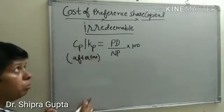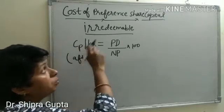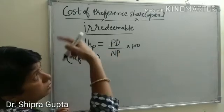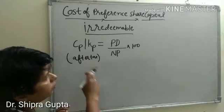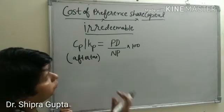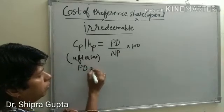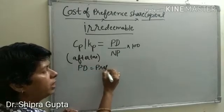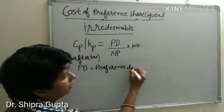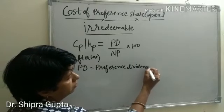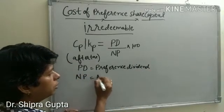It will be calculated first after tax, then before tax. The reason is that preference share dividends are distributed after tax. So we first calculate after tax, then before tax. In this formula, Pd stands for preference dividend and Np stands for net proceeds.